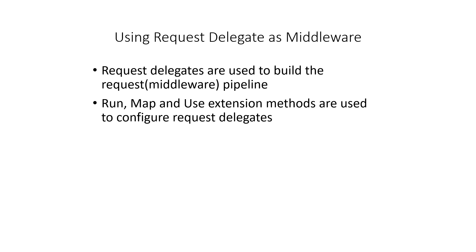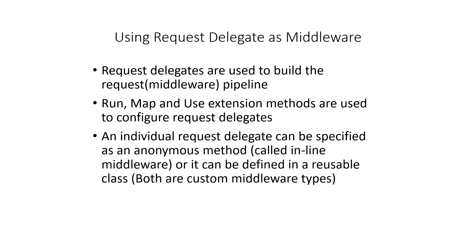We will be using Run, Map, and Use extension methods — they are used to configure request delegates. An individual request delegate can be specified as an anonymous method, which is called inline middleware, or it can be defined as a reusable class — both are custom middleware types. For a detailed discussion of the reusable class approach, I will keep that for a later lecture as it is an advanced topic. For now, we shall inspect the inline middleware written with an anonymous method.